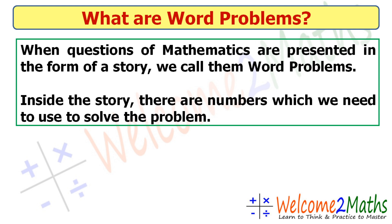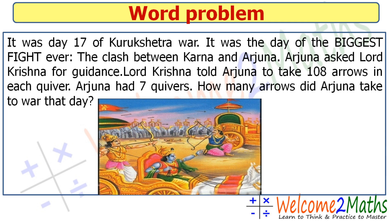So let's see what is our today's story, or our word problem. It was day 17 of the Kurukshetra war — the day of the biggest fight ever, the clash between Karna and Arjuna. Arjuna asked Lord Krishna for guidance, and Lord Krishna told Arjuna to take 108 arrows in each quiver. Arjuna had seven quivers. How many arrows did Arjuna take to war that day?